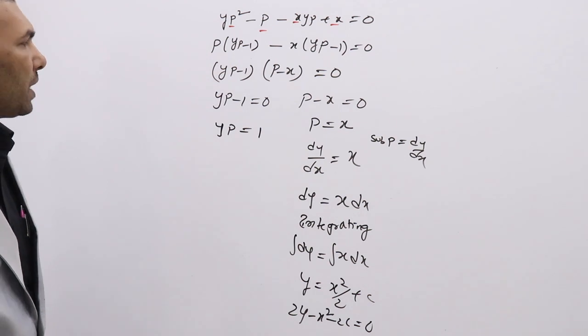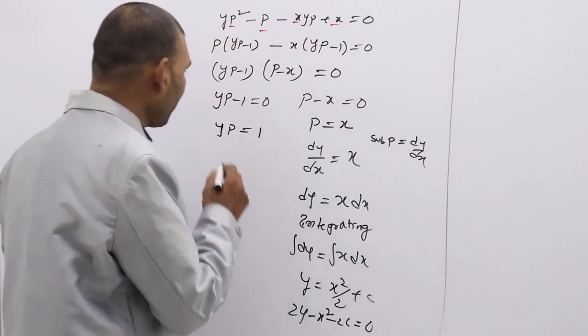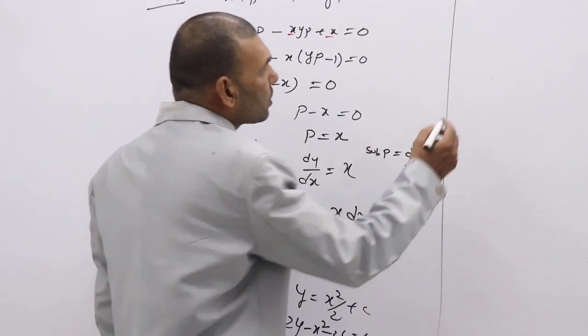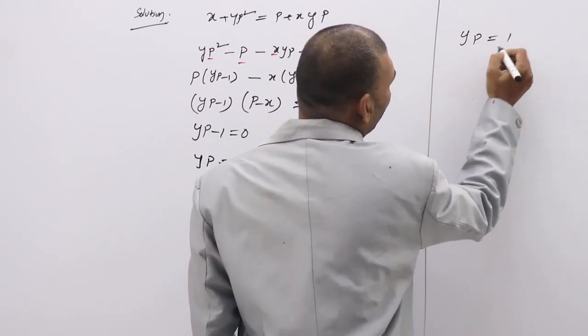By equating p is to x. Next, coming to next one, yp equal to 1. So if you equate this one, yp equal to 1.